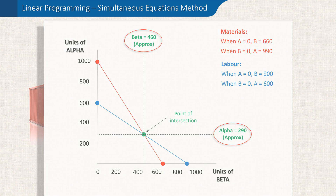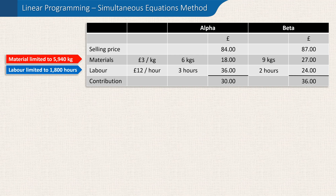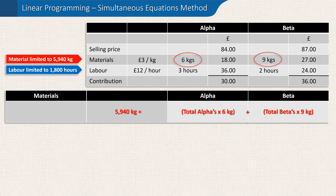Let's bring up the same data we used in the previous video. In our example we were told that in the next period the materials would be limited to 5940 kilograms and that labour was also limited to 1800 hours. The total materials available will all be used up and will equal the number of alphas produced times 6 kilograms, plus the number of betas produced times the amount of material needed. Using the letter A for alpha and B for beta, this gives us the equation: 6A plus 9B equals 5940.